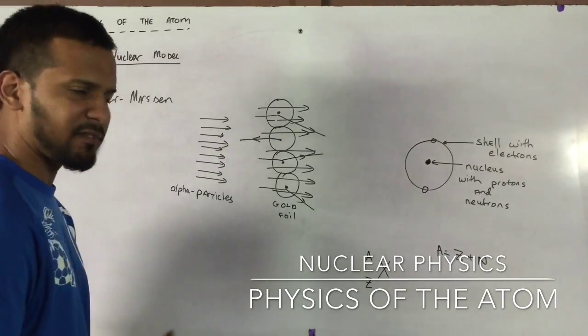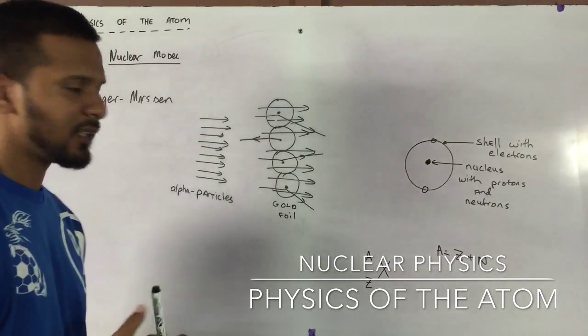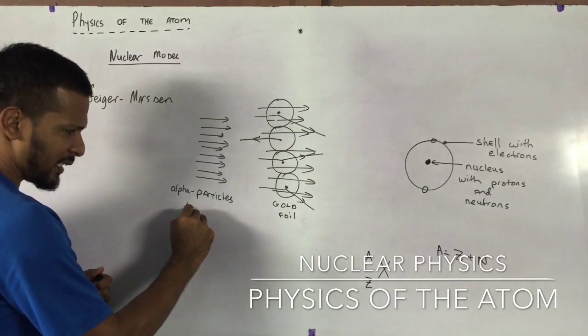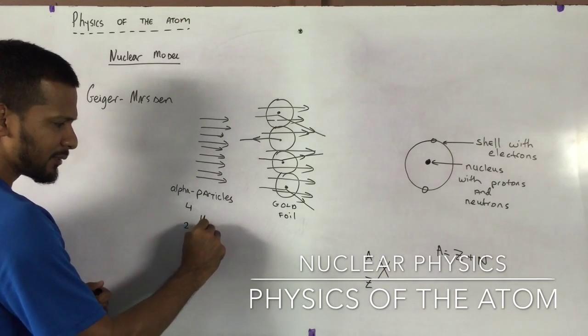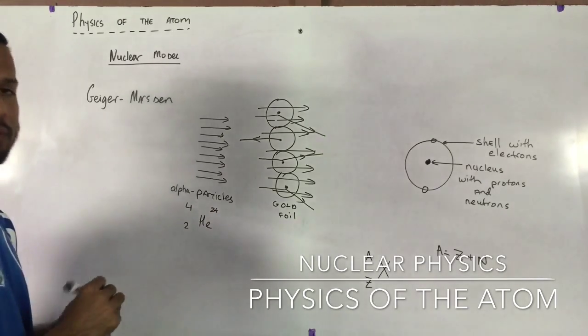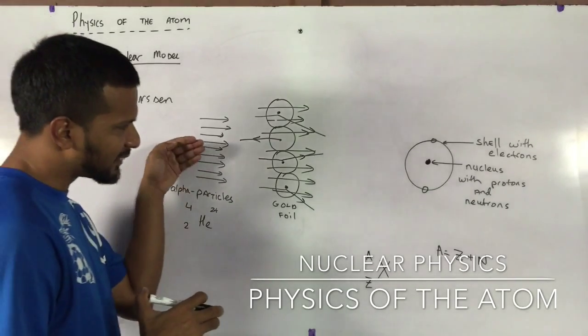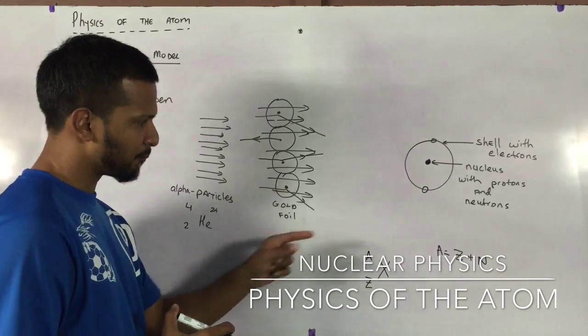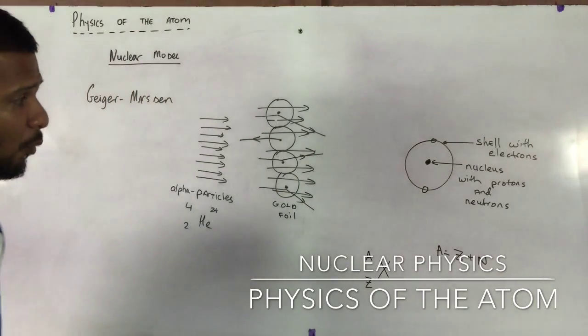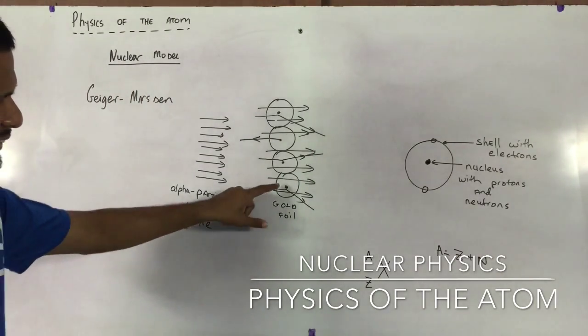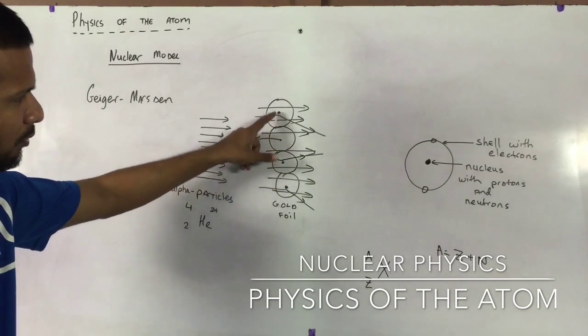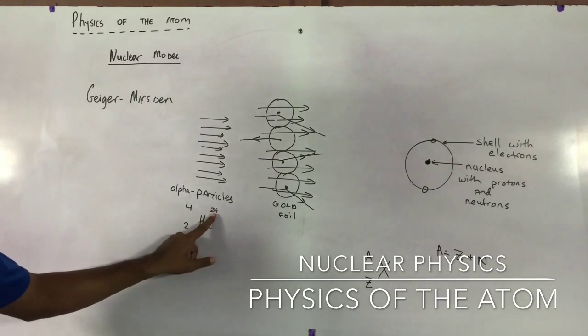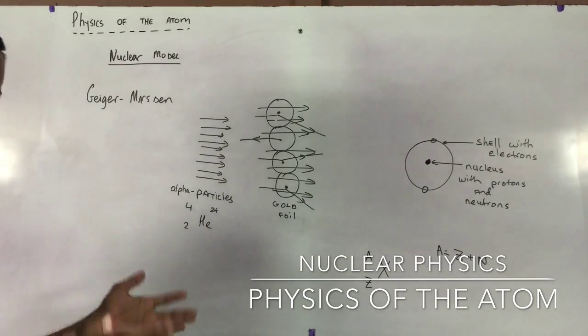They also observed that a few of these particles were deflected. What are alpha particles? Alpha particles are really helium atoms with a charge of plus two. They observed that the ones that didn't go straight through were slightly deflected. What does that mean? That simply means that this central core that the atom appears to have must be positively charged, because positive and positive causes a deflection.